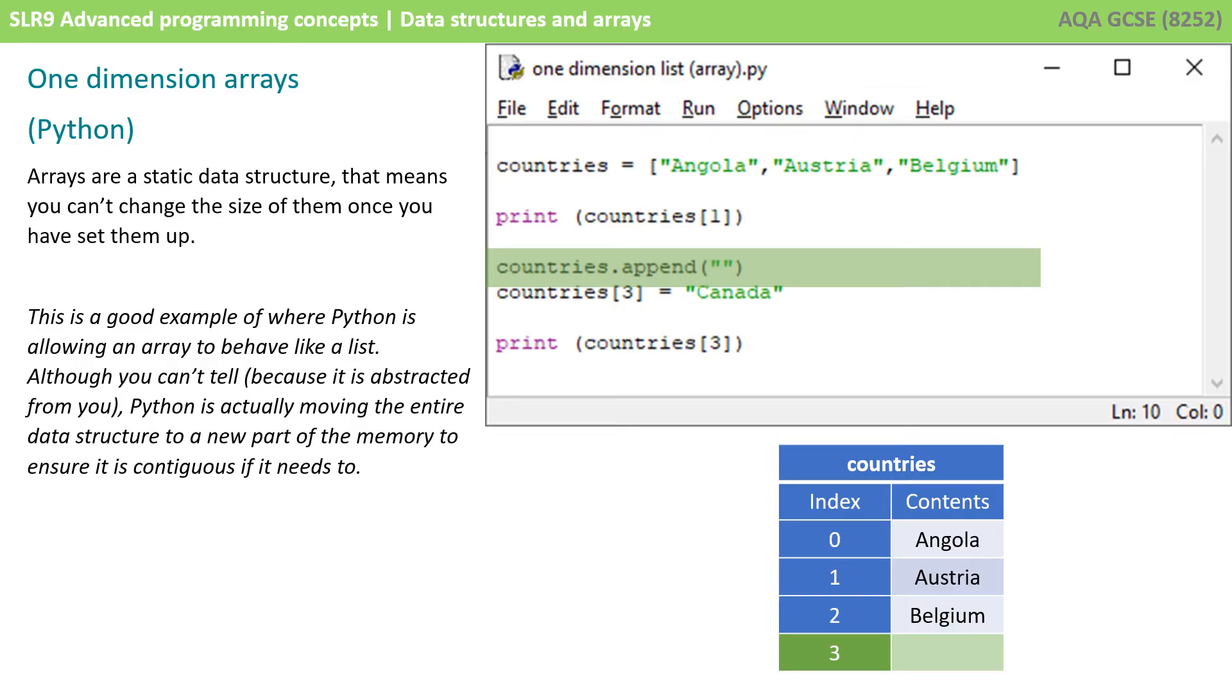Arrays are a static data structure, and that means you can't change the size of them once you've set them up. Now, this is a good example of where Python is allowing the array to behave like a list. Although you can't tell because this has been abstracted from you, Python is actually moving the entire data structure to a new part of the memory to ensure it's contiguous.